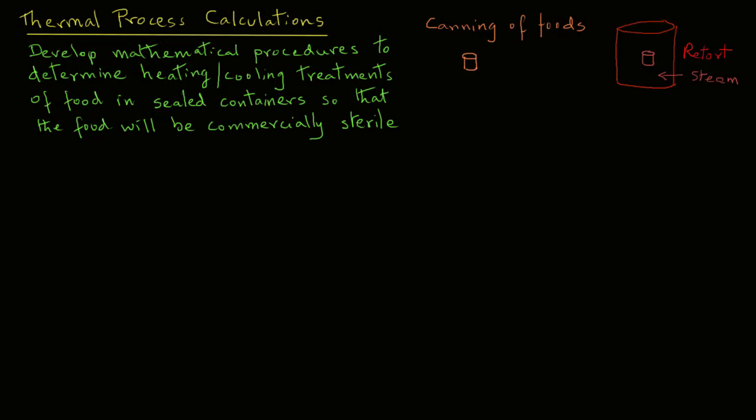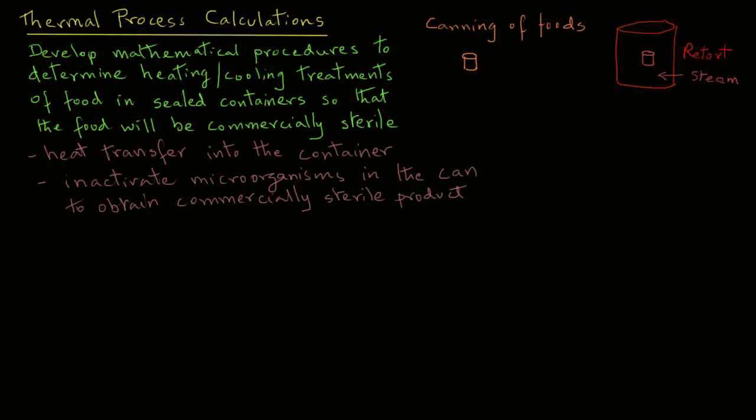When we begin heating the food in the retort, there will be heat transfer into the container. As a result of heating, the temperature of the food will increase and that will inactivate microorganisms in the can so that we can get a commercially sterile product. We are concerned with two types of organisms that are present in the food.